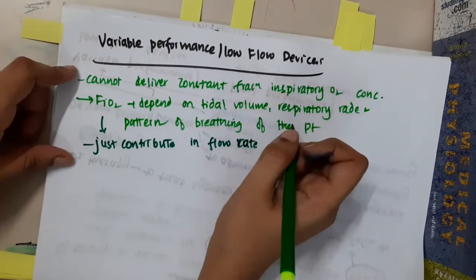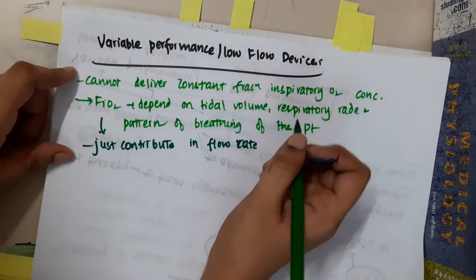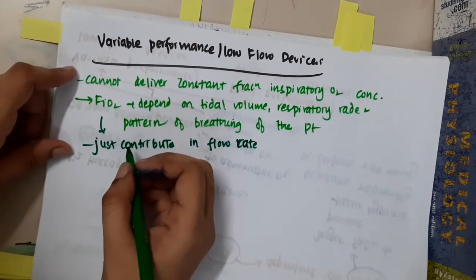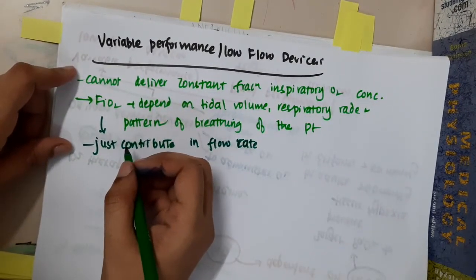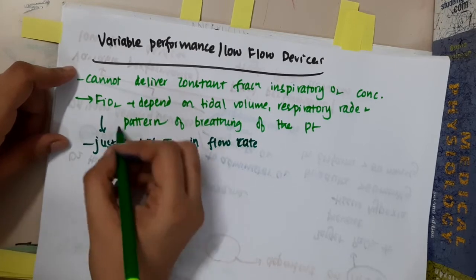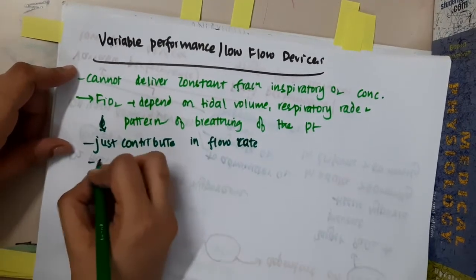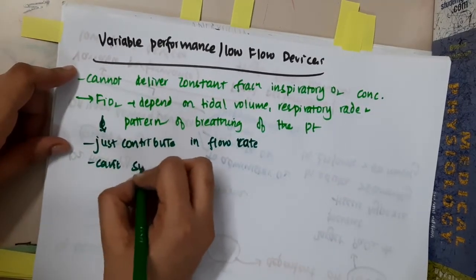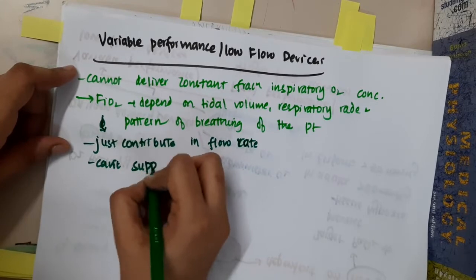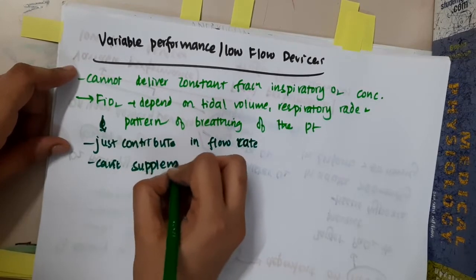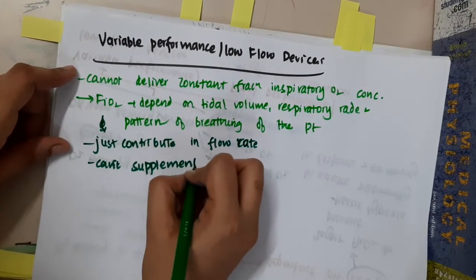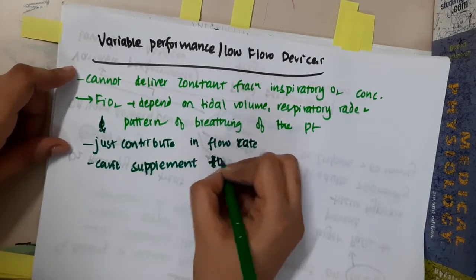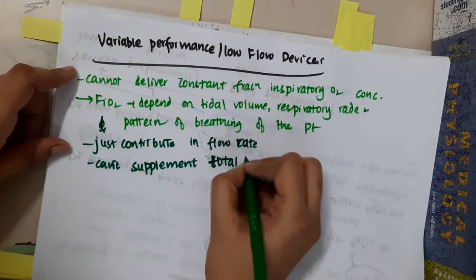These variable performance devices are mainly important for flow rate. They will just contribute to flow rate; they cannot supplement the total flow rate. They are just used to give some flow rate or some push to the patient.